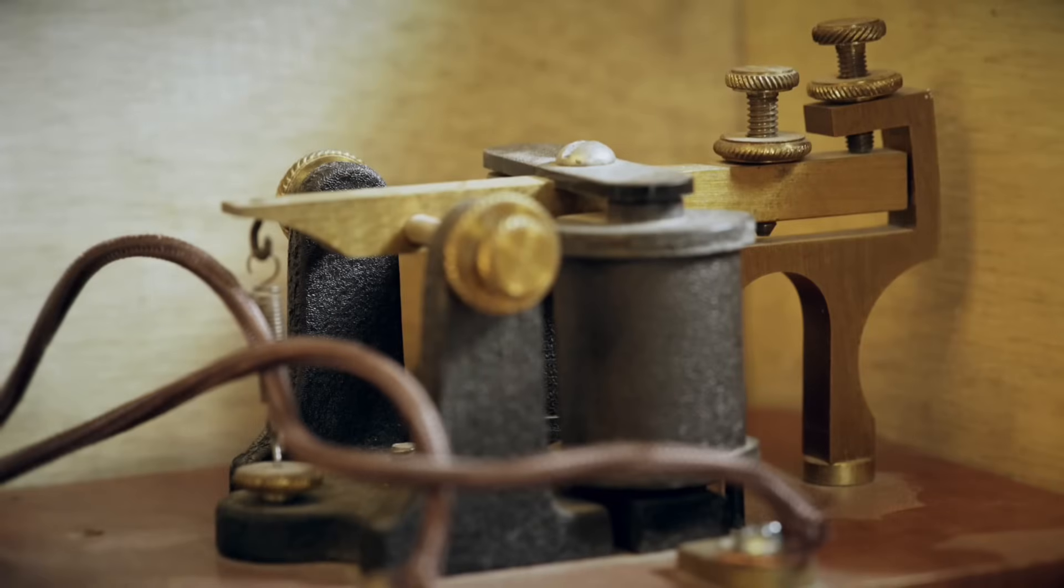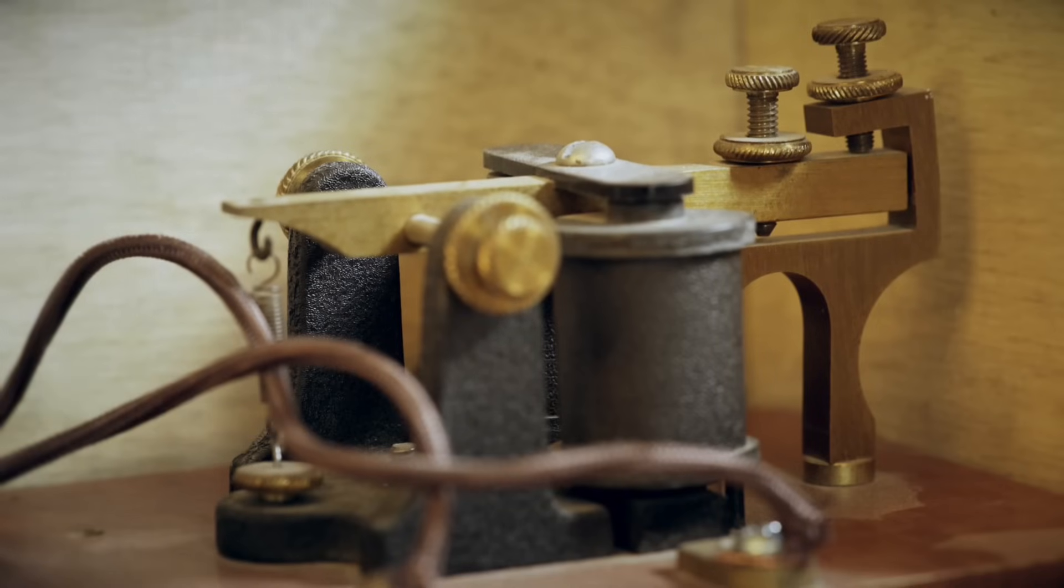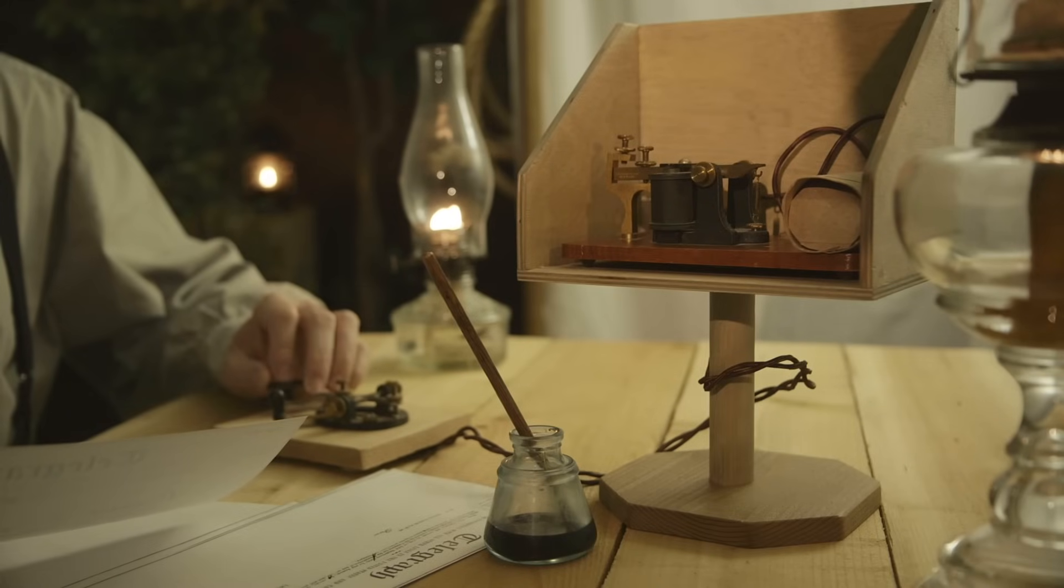Morse code can be transmitted in various ways, depending on the medium available. Traditionally, it was sent using telegraph machines, which produced clicking sounds corresponding to dots and dashes. Operators would listen carefully and transcribe the message as they received it.